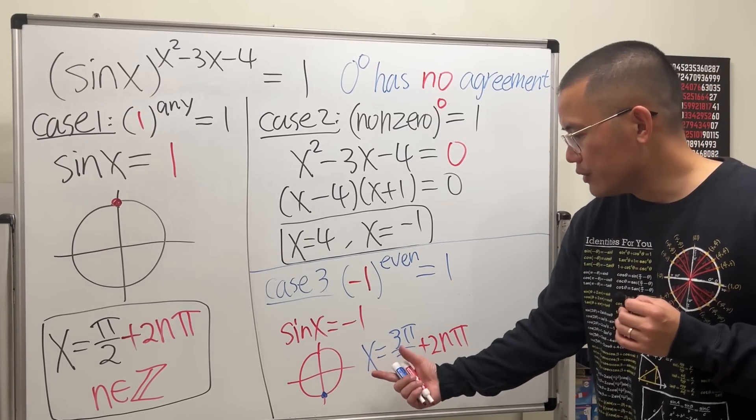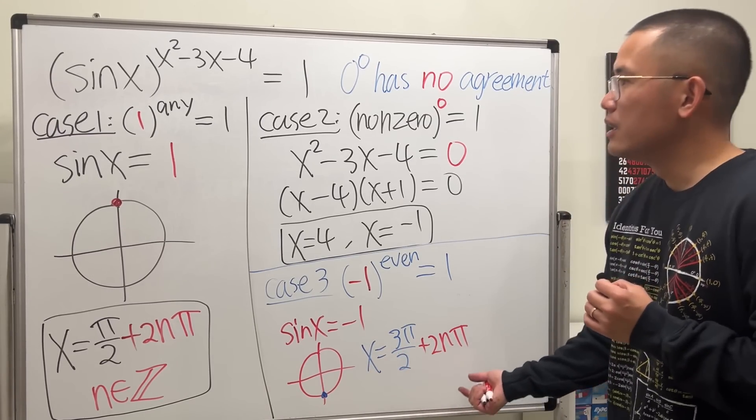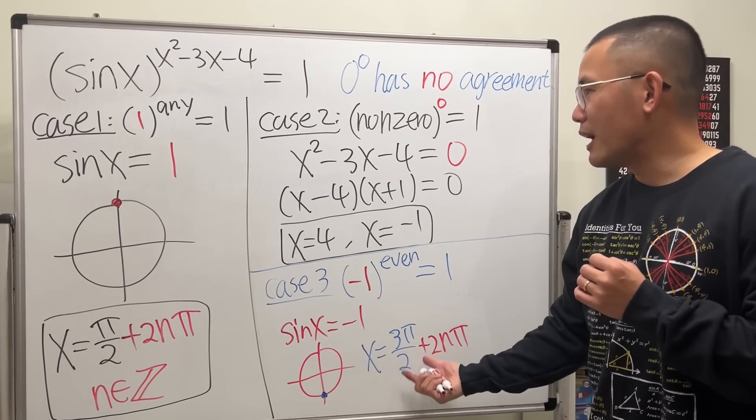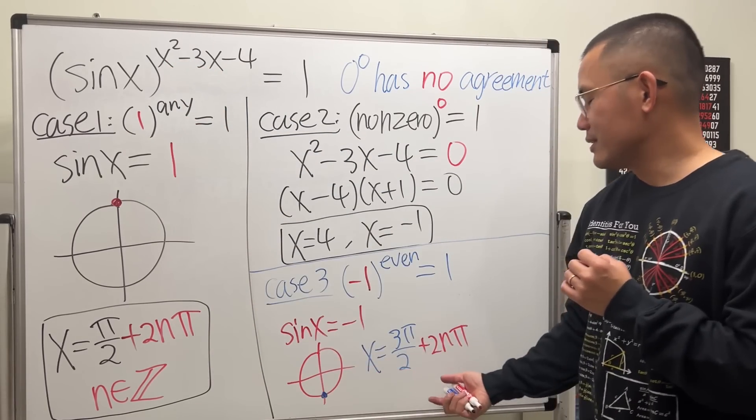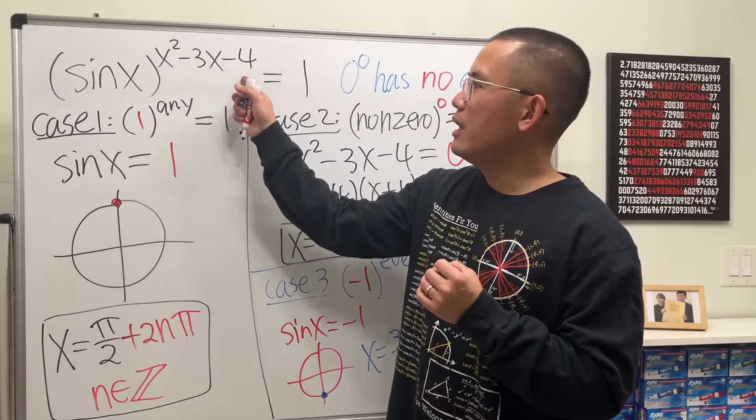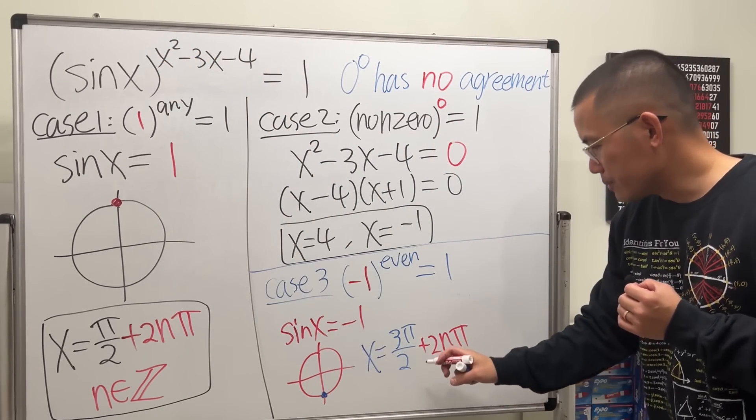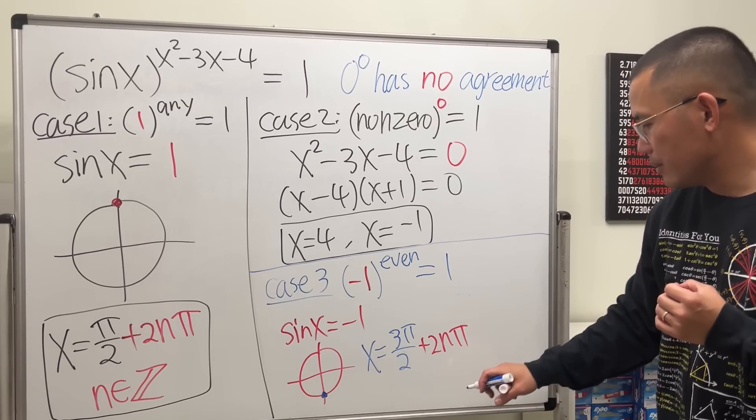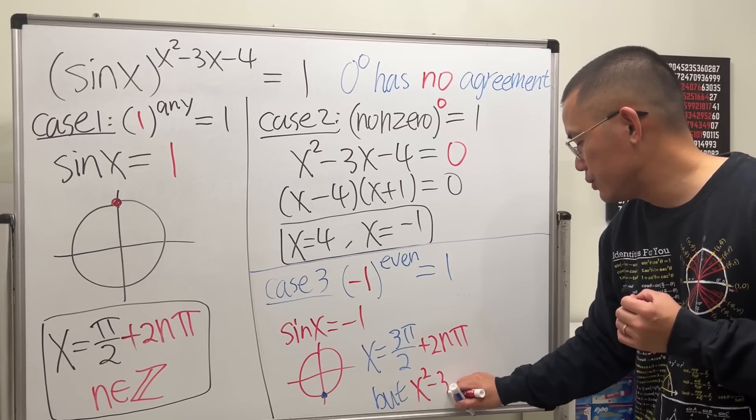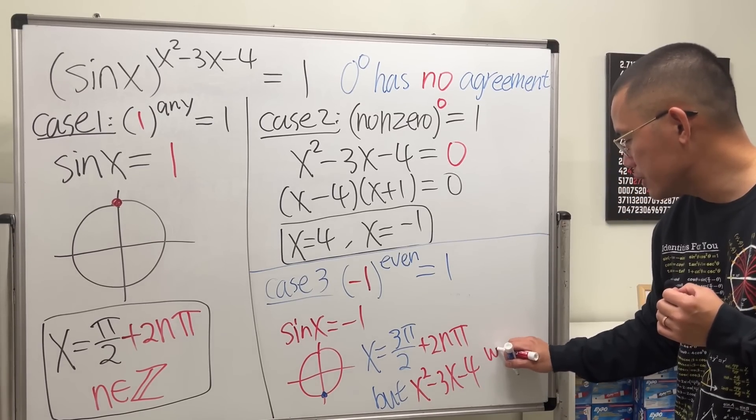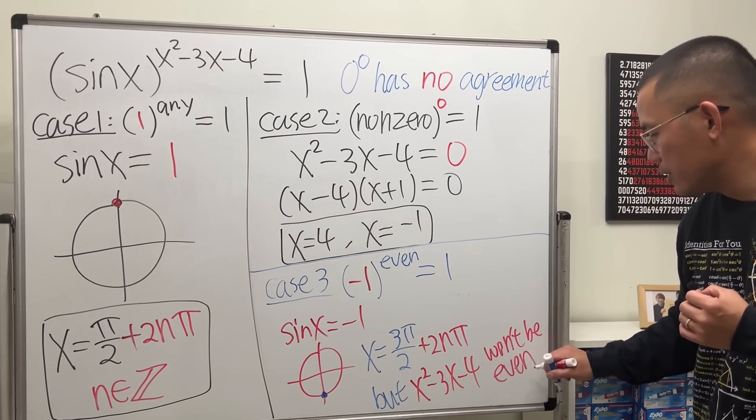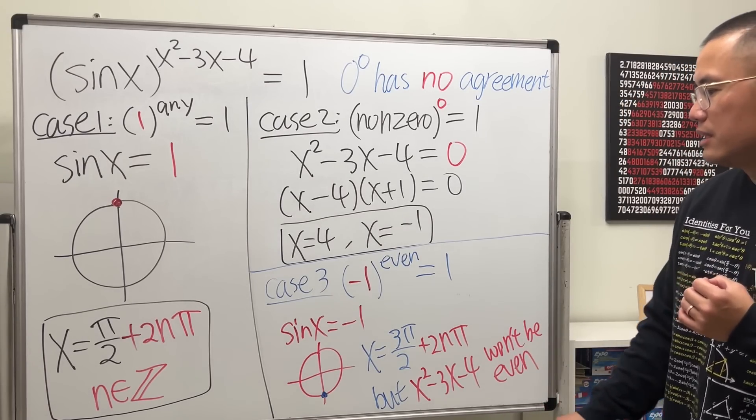But imagine if you set x to be like this, and you put this into the power here. This is a polynomial, right? If you have π squared, that's irrational. Likewise, the rest, that will also be irrational. No matter what you do, this right here won't be an even number for the power. So if x equals this, I'll say, but if you plot that in x squared minus 3x minus 4 won't be even. So don't consider this. This right here, it won't happen.